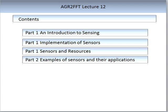In this lecture we will start with an introduction to sensing, look at the implementation of sensors in agricultural systems, and examine sensors and associated resources. Key questions to consider include: how has the agricultural industry used advancements in sensing and sensing communication to increase productivity? What are the advantages and disadvantages of sensing, and how do the economics balance up?